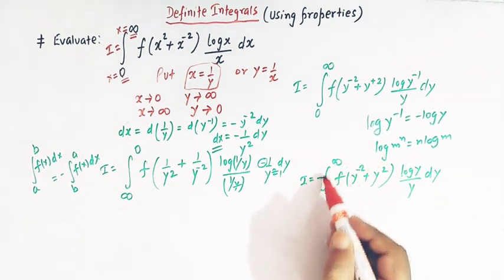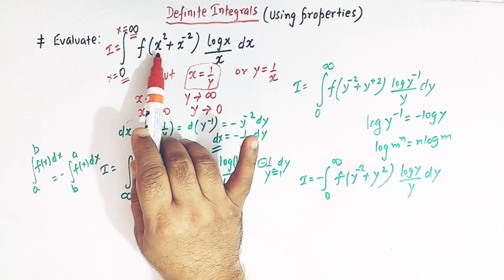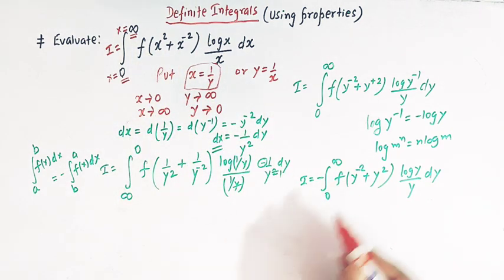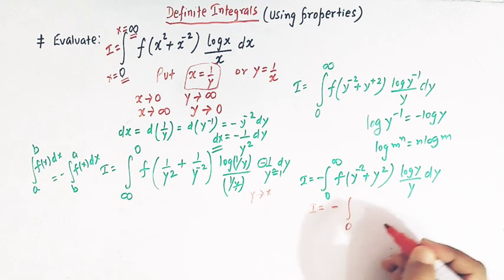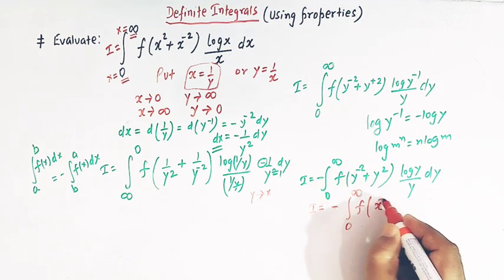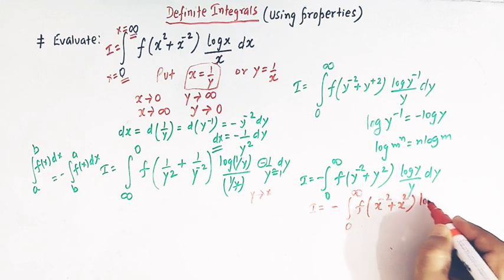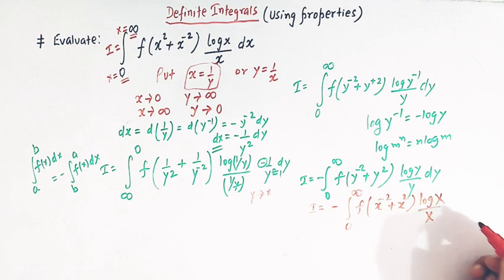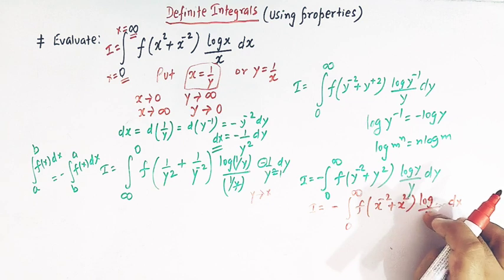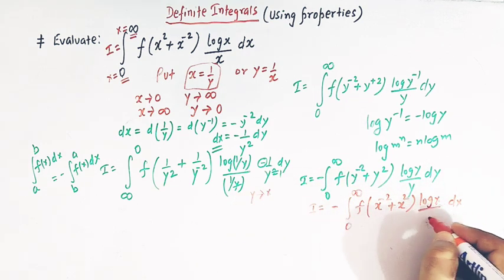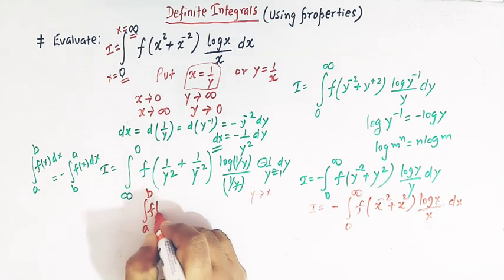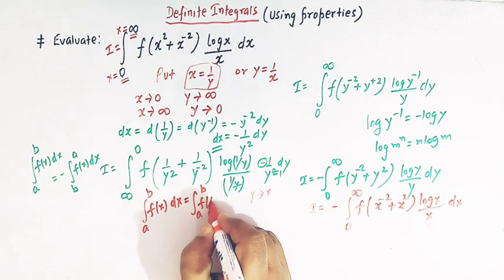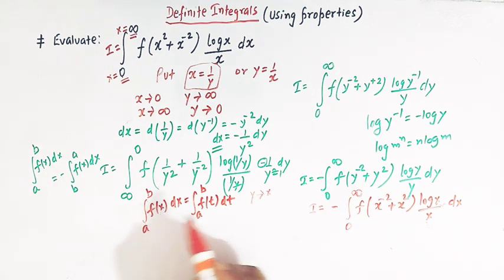Now we can see that this integral is similar to the original one, except that here we have the variable y instead of x. If we change the variable from y to x, this integral can be written as negative of the integral from 0 to infinity of f of x raised to minus 2 plus x squared, times log x over x, dx. We have replaced y with x using the dummy variable property of definite integrals: the integral from a to b of f(x)dx is the same as the integral from a to b of f(t)dt.